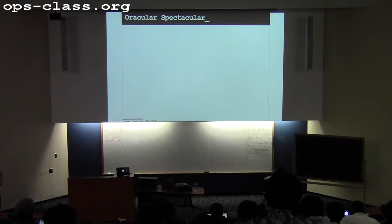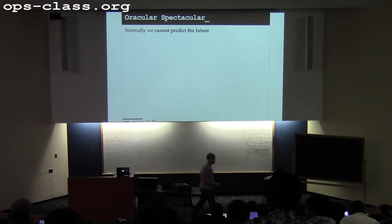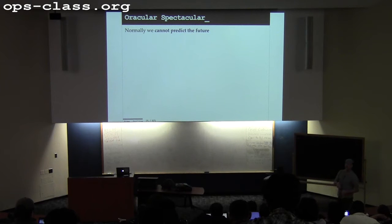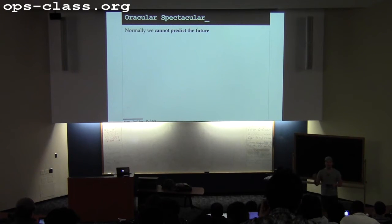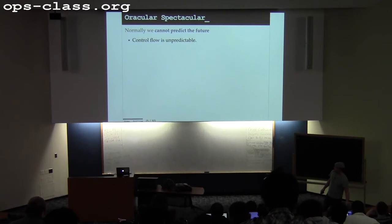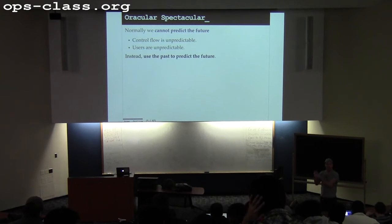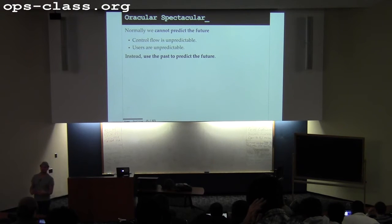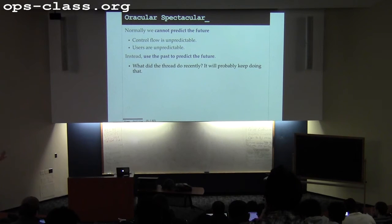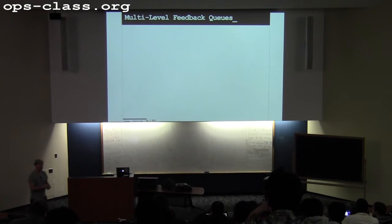Last time we talked about shortest job first, the scheduler that could predict the future — it knew how long each job was going to run before it blocked. Normally this is not possible; we can't predict the future. So what do we do instead? This is one of the major design principles of this class: when you can't predict the future, use the past to predict the future. We hope that patterns of behavior emerge over time that let us determine how long a thread will run and whether it's an interactive task.